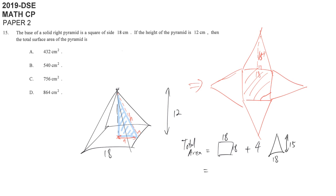So, this net drawing helps you to get the answer easily, and reduce your burden in your brain. So, it's 1 over 2 times 18 times 15.